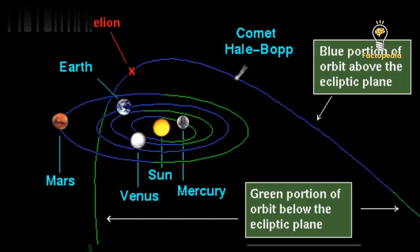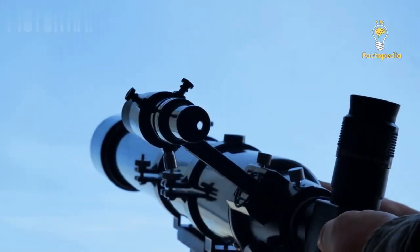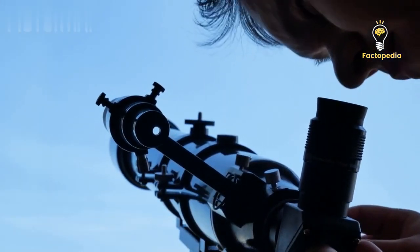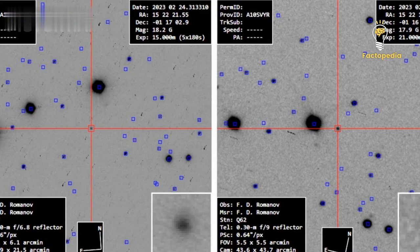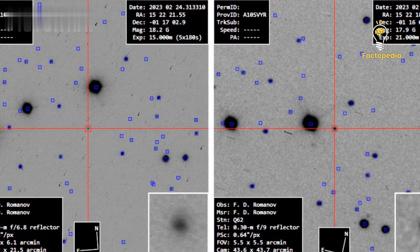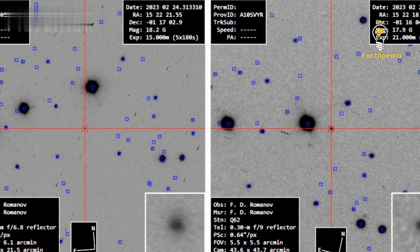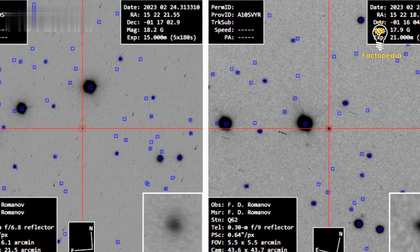Comets can sometimes surprise us, as seen with previous comets like Hale-Bopp and McNaught, which put on stunning displays. Currently, comet A3 is very faint and can only be seen with large telescopes. But if it behaves as expected, it should become visible through small telescopes in the early summer of 2024 and possibly visible to the naked eye or binoculars by late September of that year.